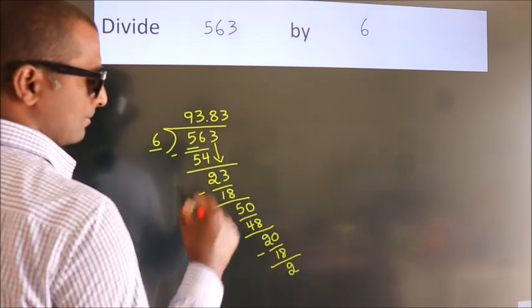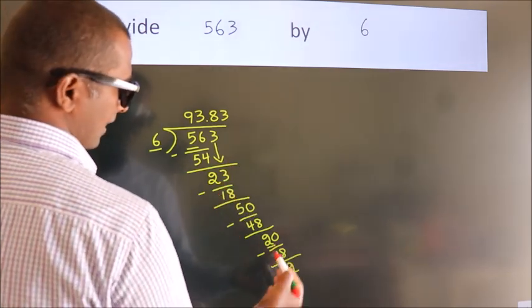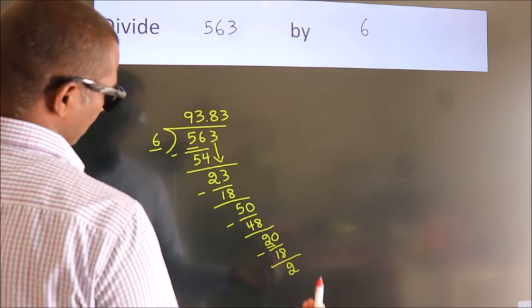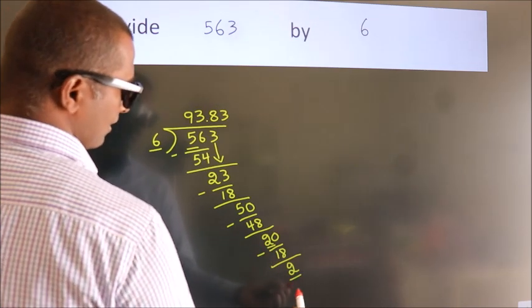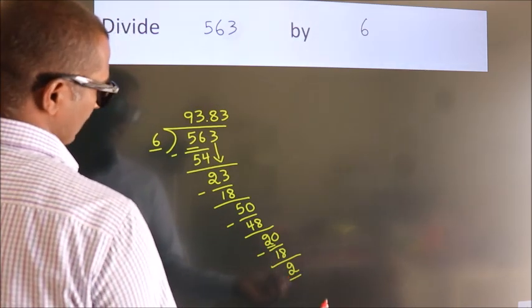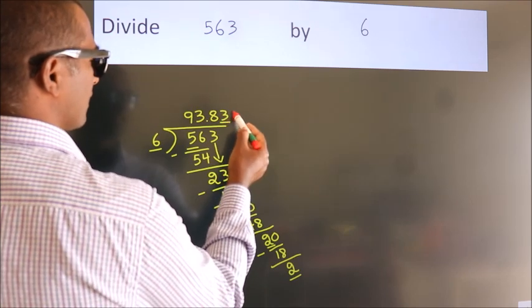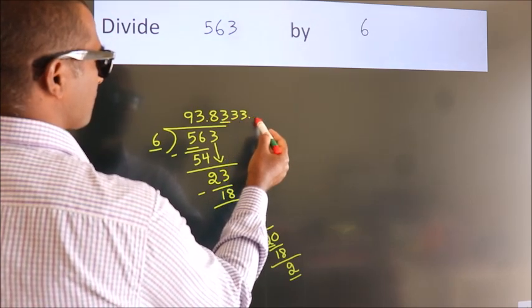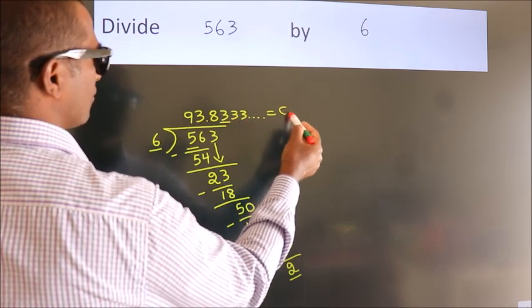Now you observe. We had 2 here, and we got 2 again. That means this number keeps on repeating. So this is our quotient.